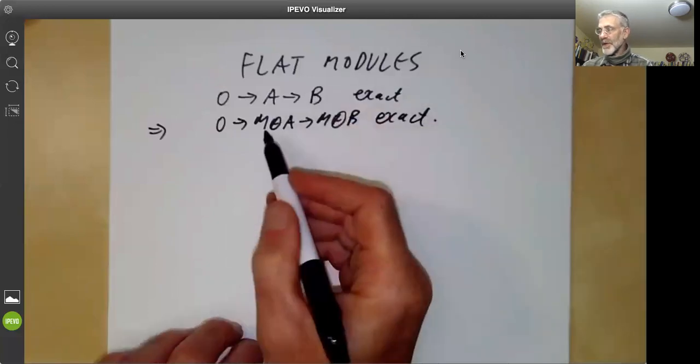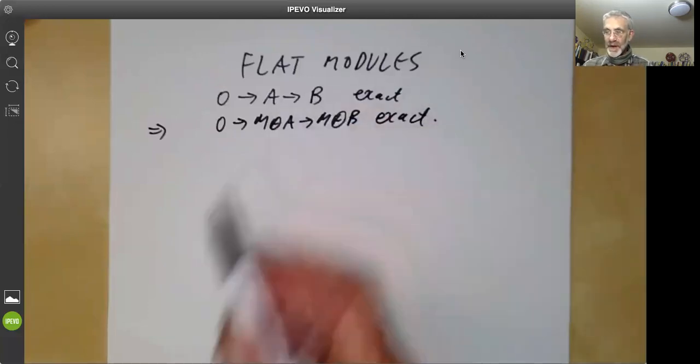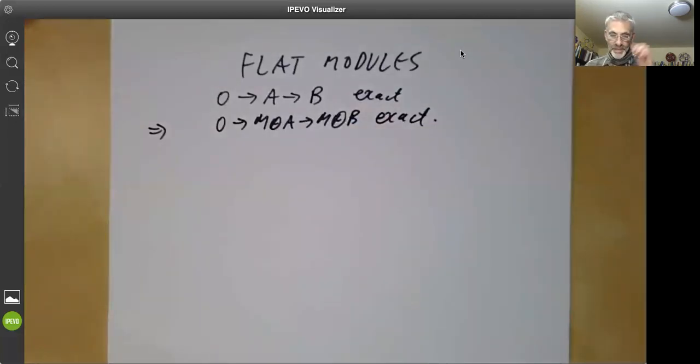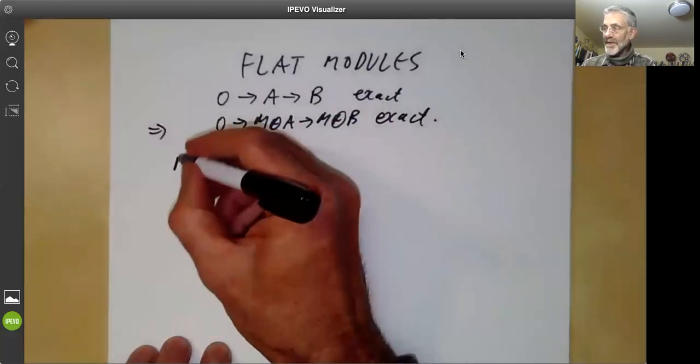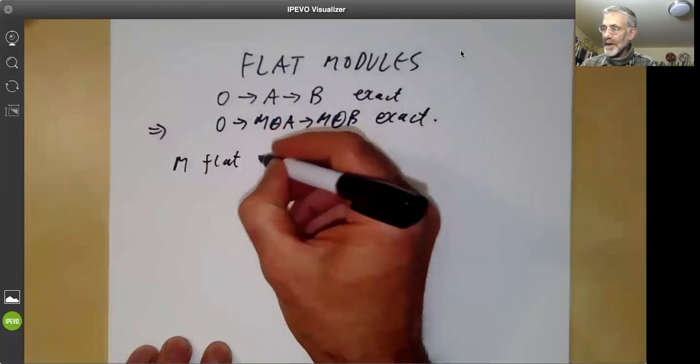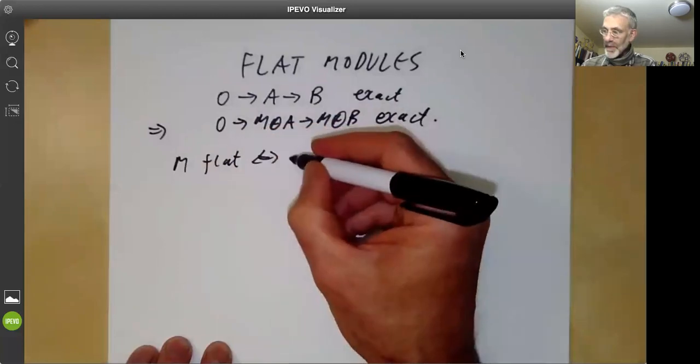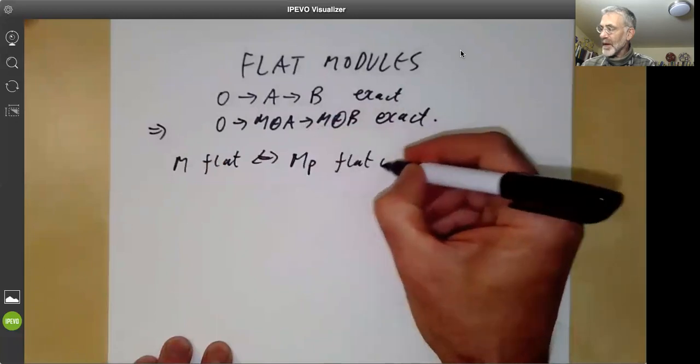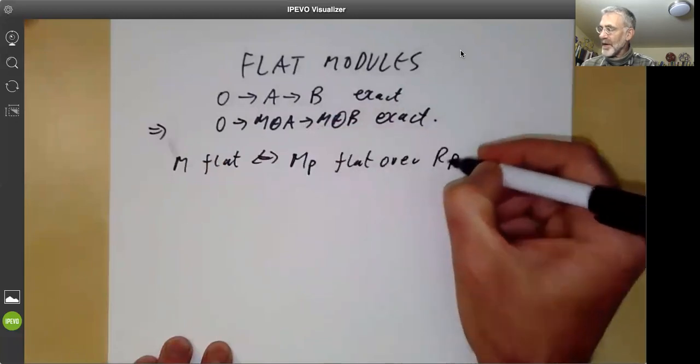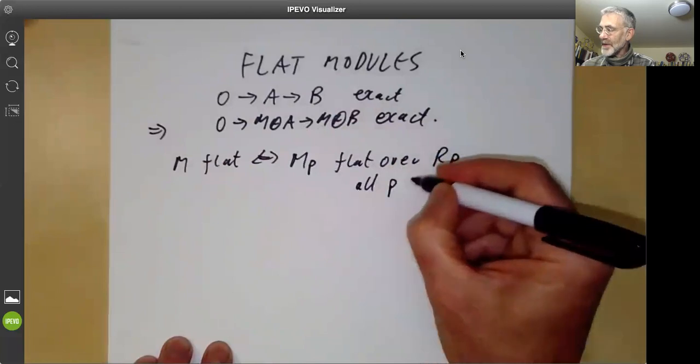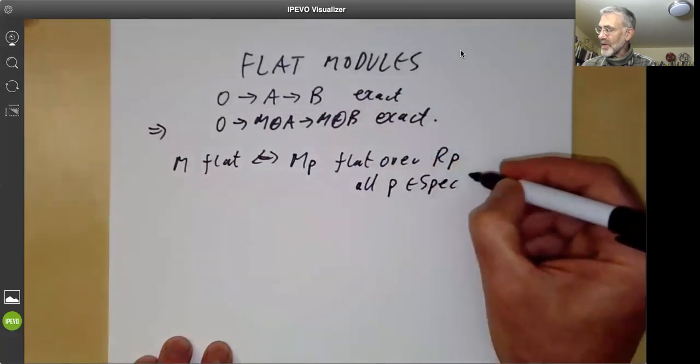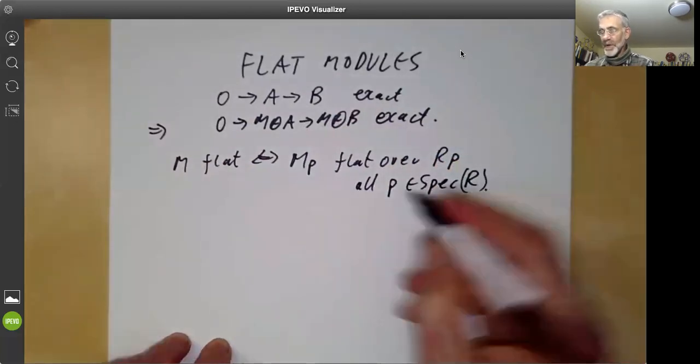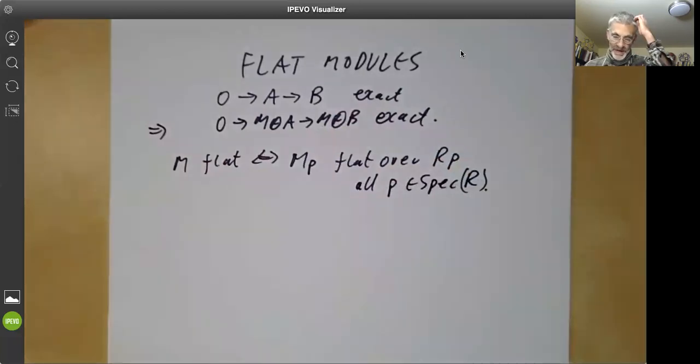In other words, tensoring with a flat module preserves injectiveness. And we've also seen earlier that m is flat is equivalent to the localization mp being flat over rp for all primes in the spectrum of the ring r. It could also take all maximal elements of the spectrum.